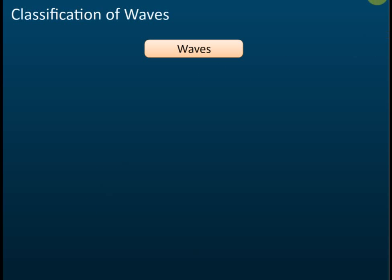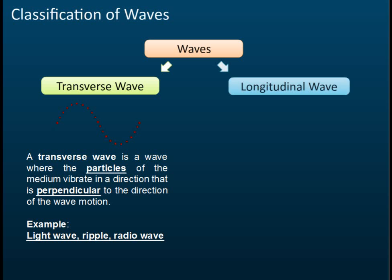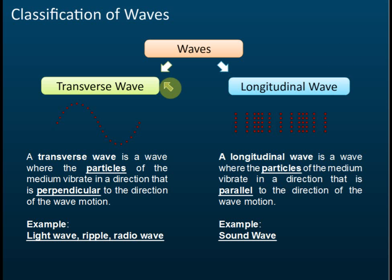Classifications of waves. Waves can be divided into two types according to the way they propagate. We divide waves into two types: transverse wave and longitudinal wave.